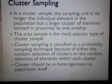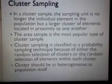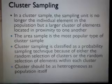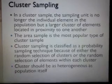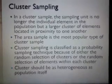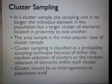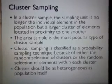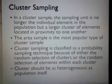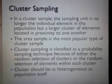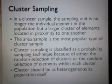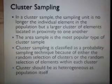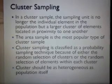Cluster sampling is classified as a probability sampling technique because of either the random selection of clusters or the random selection of elements within each cluster. After forming clusters, sampling within those clusters is done using simple random sampling. Data collectors working on one cluster do not move to another cluster — data from different clusters is collected separately.